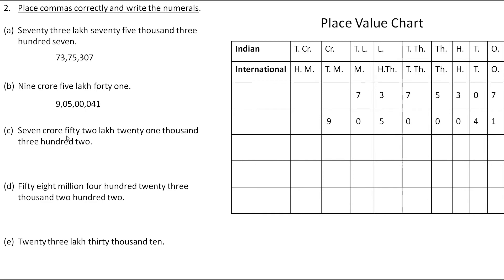The next is 7 crore 52 lakh 21,000 302. We put 7 in the crore group, 52 in the lakh group, 21 in the thousands group, and 302 in the ones group. The number is written accordingly. We leave three digits from the right, put a comma, then leave each two digits and put a comma.